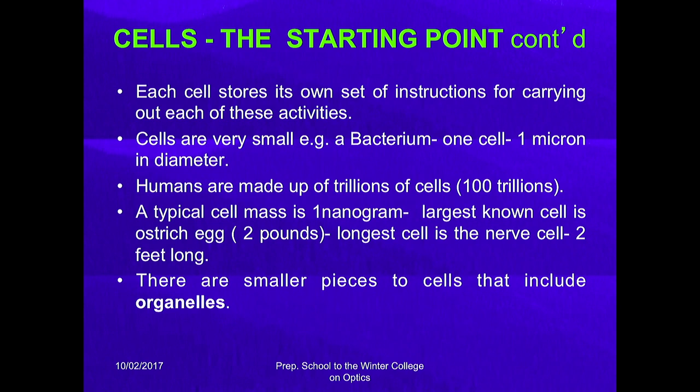Cells are very small. For example, a bacterium which consists of a single cell has a diameter of one micron. But there are cells which are very large — an ostrich egg is the largest cell, whose weight is almost two to three pounds. The longest cell is the human nerve cell, which is around two meters. Humans are made of trillions of cells, and there are smaller pieces of cells that include organelles.